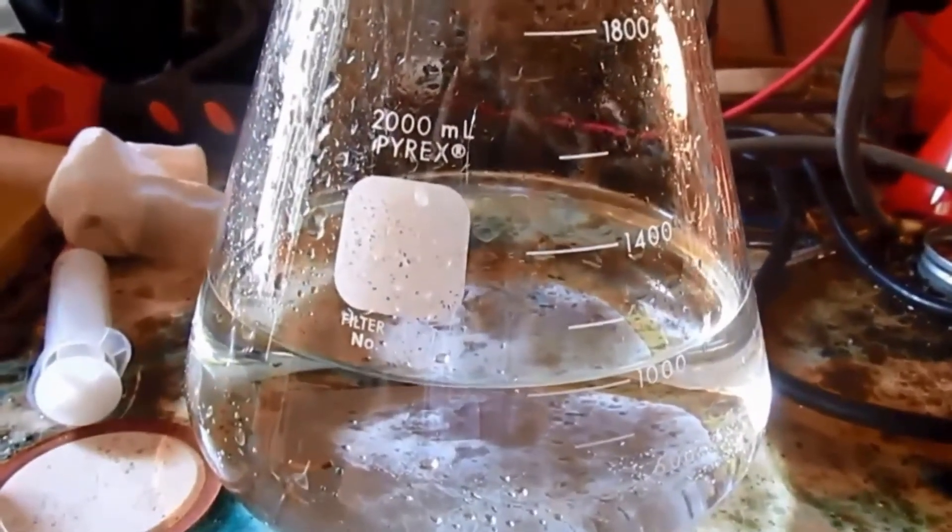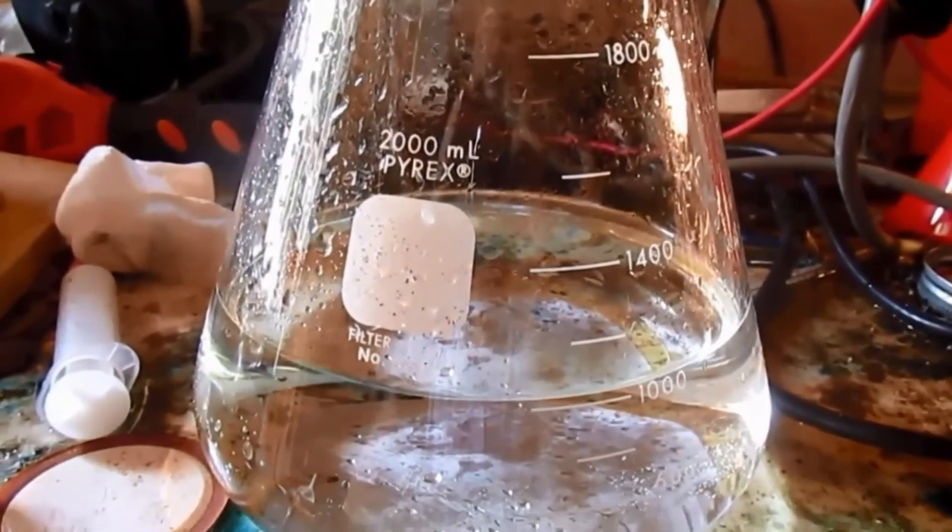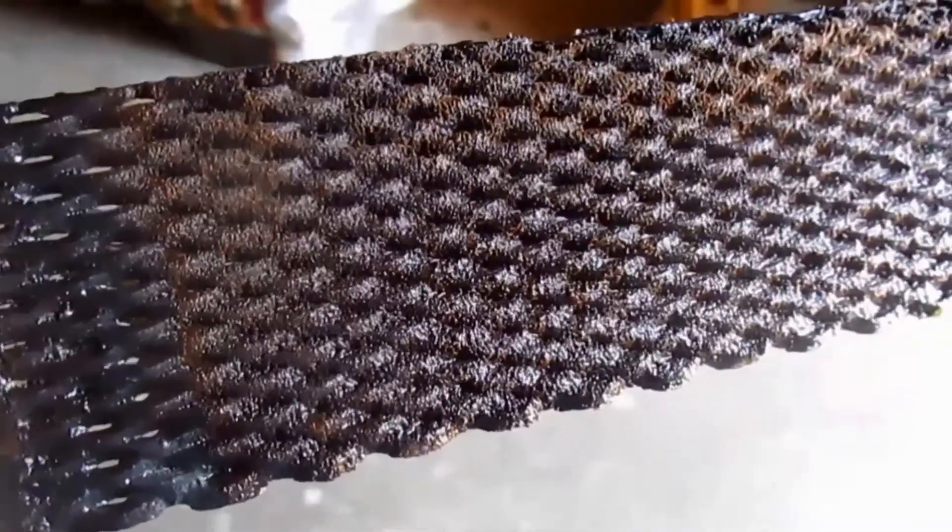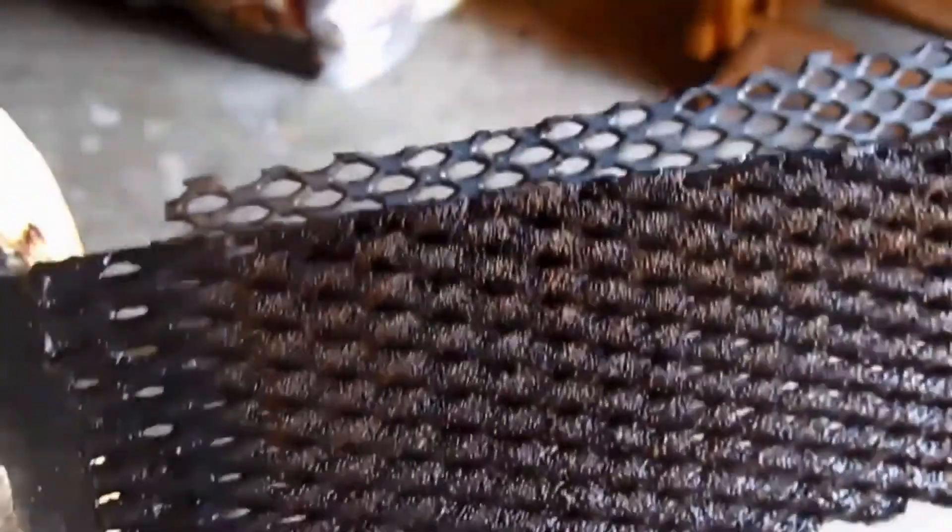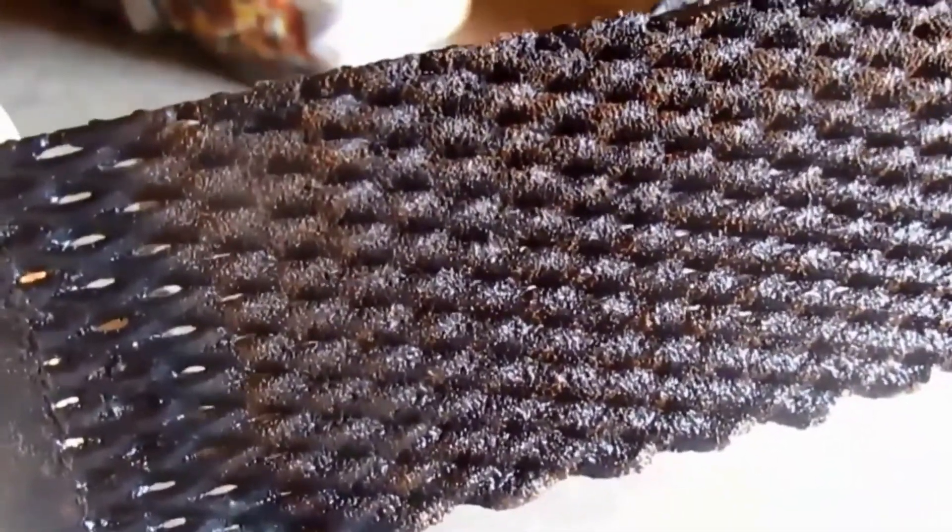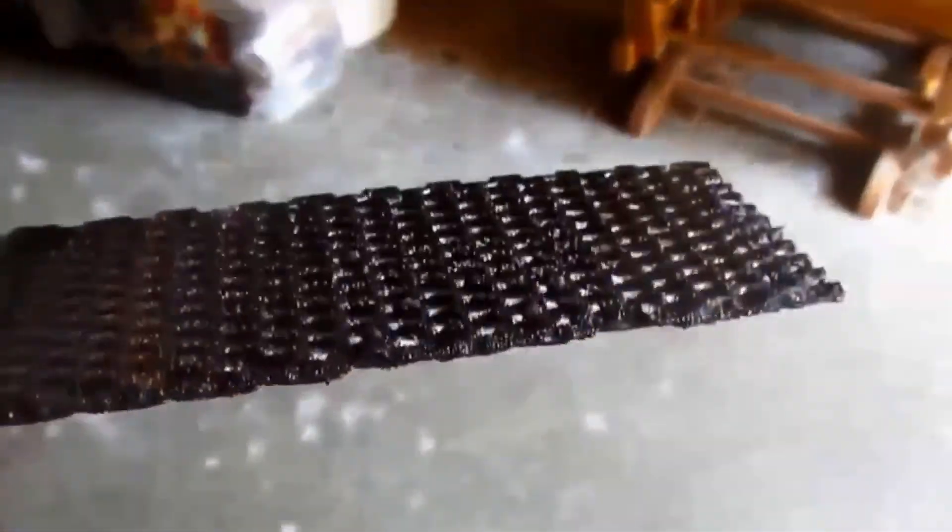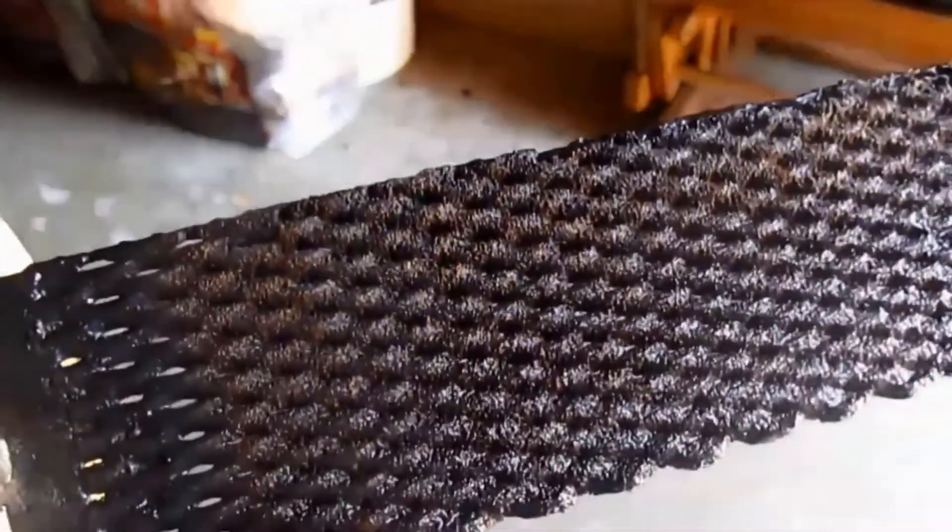To give you a closer look at the anode, this is the titanium substrate lead dioxide anode. As you can see, even after 72 hours—well, around 75—the anode really looks pretty good. It's not even really touched.